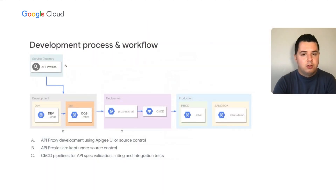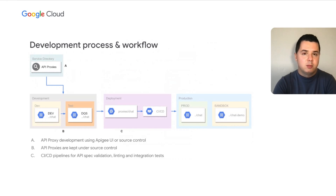We really wanted to reduce the number of steps and keep the process friction-free. For the SDLC, API proxy development can happen in the UI or source control, after which it's checked in and CI/CD pipelines perform API spec validation, linting, and integration tests. If tests pass, code can be optionally deployed to production or a sandbox environment where it can be tested internally by our developers.